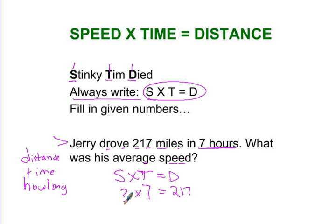Now I have a missing number here. Something times 7 is 217. How would you find this missing number? Well, this is a missing number in a multiplication problem. So I am going to do division back this way in order to solve it. 217 divided by 7.